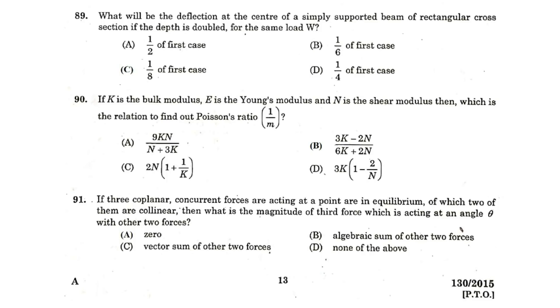What will be the deflection at the center of a simply supported beam of rectangular cross-section if the depth is doubled for the same load W? 1 by 8 of the first case. If K is the bulk modulus, E is the Young's modulus and N is the shear modulus, then which is the relation to find out Poisson's ratio 1 by M? 3K minus 2N divided by 6K plus 2N.